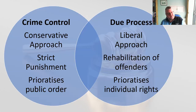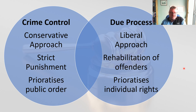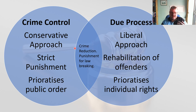Think of it like a Venn diagram: crime control takes a conservative approach, generally favouring strict punishment and prioritising public order, while due process takes a liberal approach, more concerned with rehabilitation of offenders and prioritising individual rights. That said, the two do have some common ground — both see crime reduction as a focus and both accept punishment for breaking the law. It's how you assess guilt that differs.